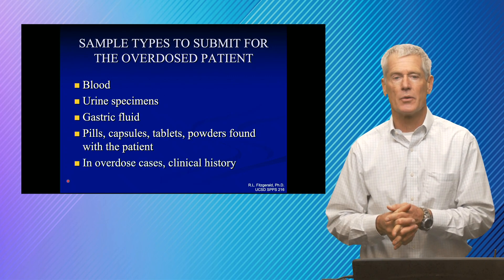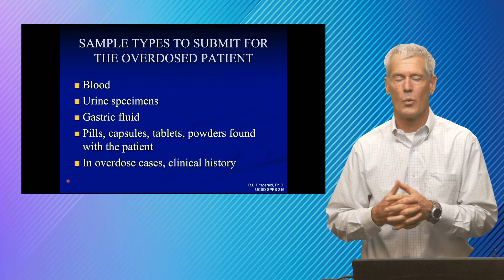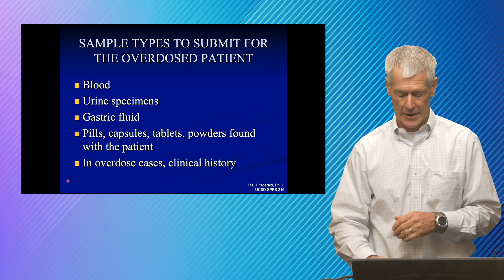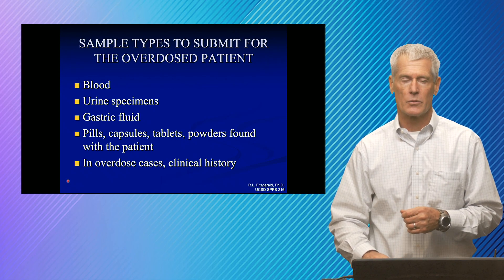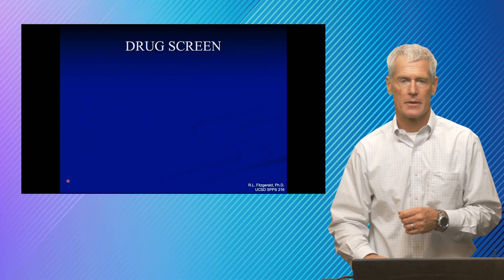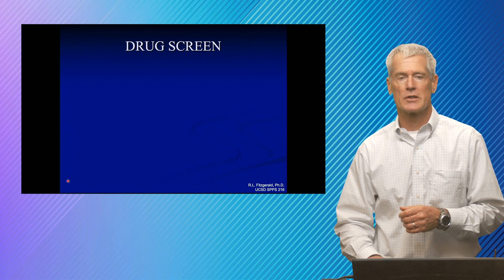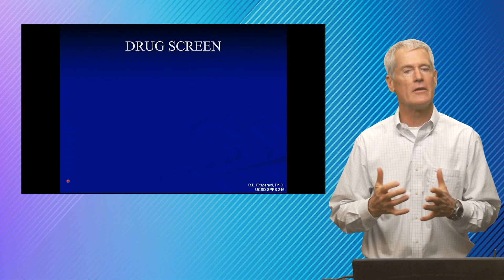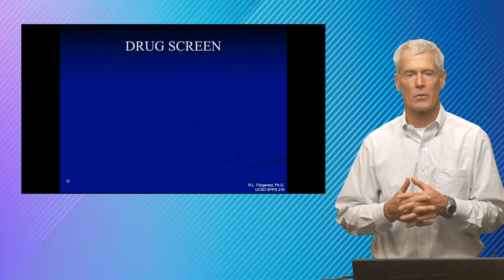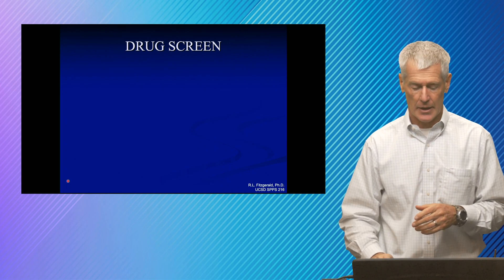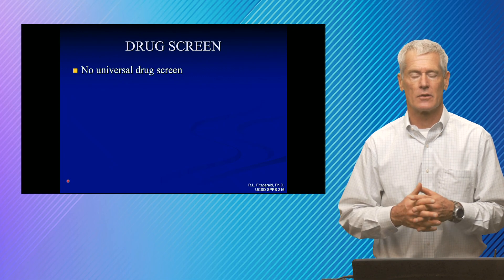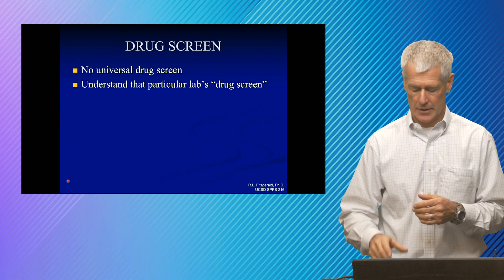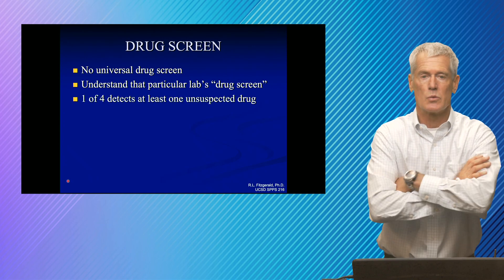Clinical history is really important — what are the signs and symptoms? If we identify something, we can correlate that to the clinical findings. So what is a drug screen? A drug screen is different every place you go, and you need to figure that out when you come to a new hospital or laboratory. What is the basis of their drug screens? Because none of them are universal, and that's why it's important to understand each individual one.